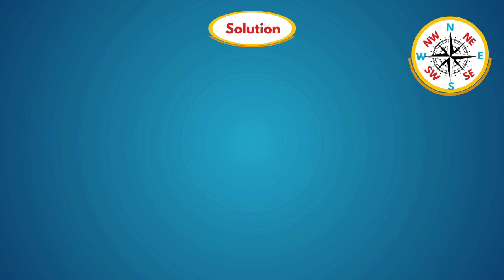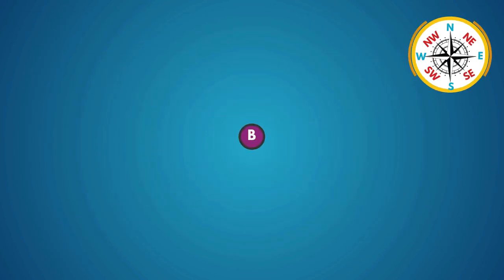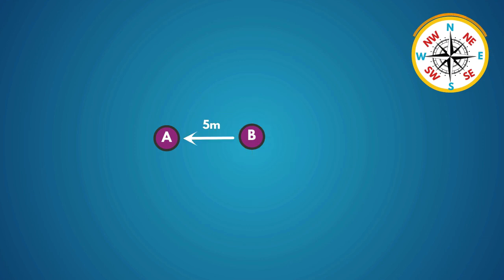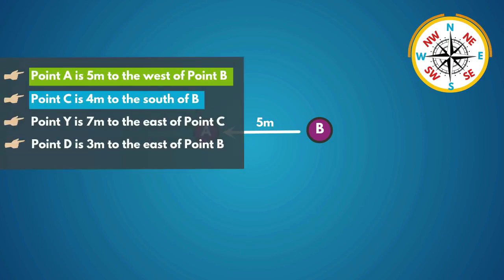Let's draw the diagram based on the information. In the question they given that point A is 5 meters to the west of point B. Here, this is point B, and point A is 5 meters to the west of point B.